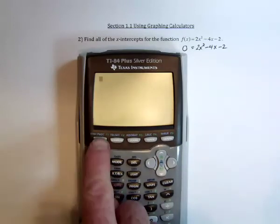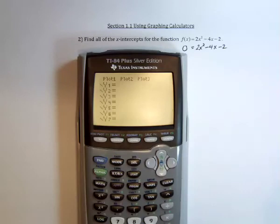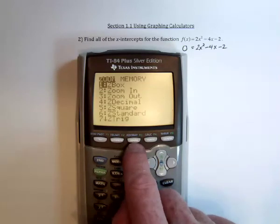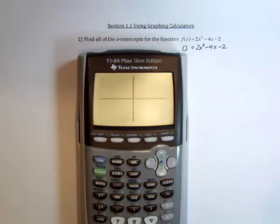y equals, and then 2x is squared, subtract 4x, subtract 2. And then go to zoom number 6, standard window.